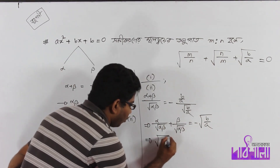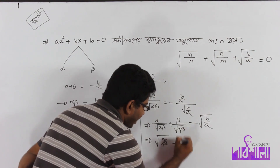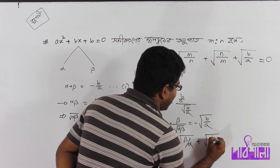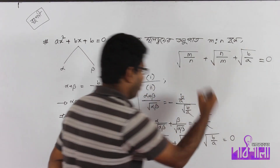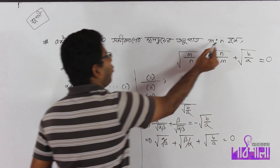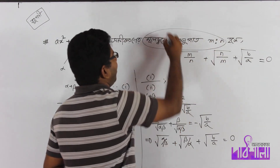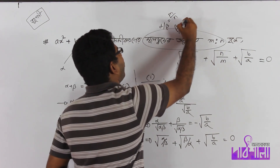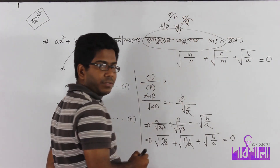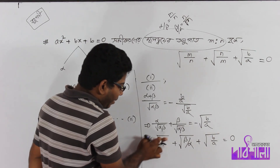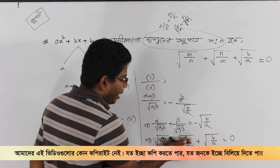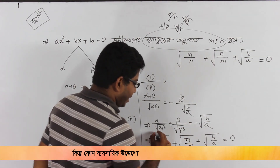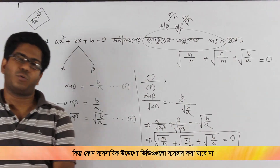পর দেখো — একান থেকে এতো calculate করলে যেটা আসি root over alpha by beta plus একান থেকে আসি root over beta by alpha, এবং একান থেকে আসি plus root over b by a equal to 0. But Peter cannot replace the contemporary in divided by India — taking the time from the portable formula.